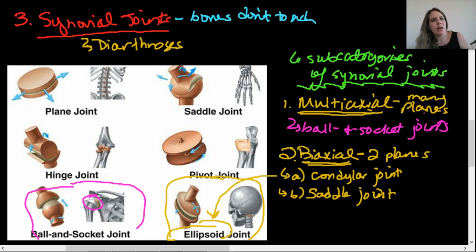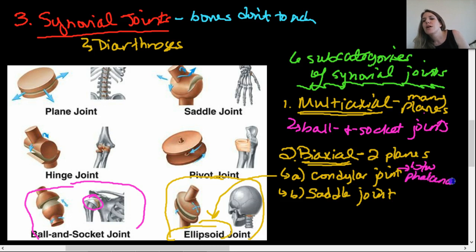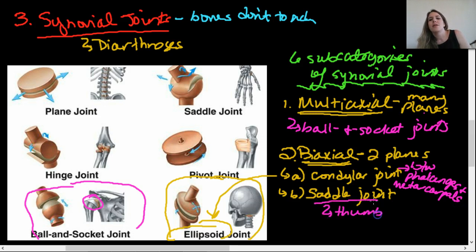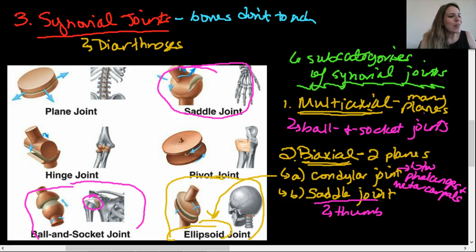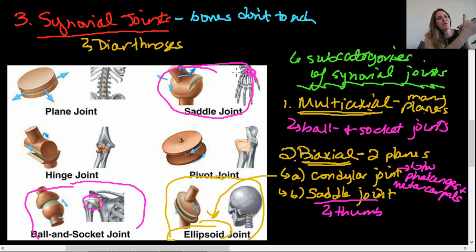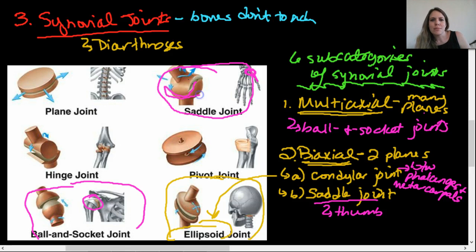The saddle joint is found at your thumb — between the trapezium carpal bone and the thumb. It allows the thumb to go side to side and forwards and backwards. It's called a saddle joint because the articular surface looks like a saddle. Both condylar and saddle joints are biaxial, allowing movement in two planes.